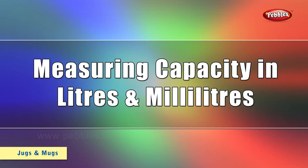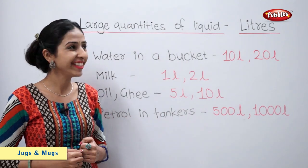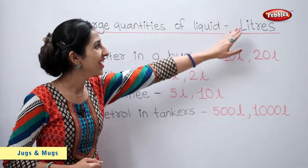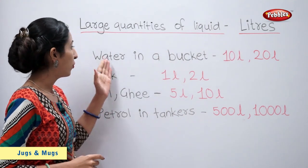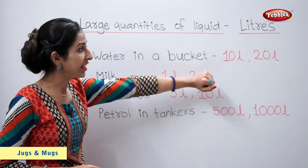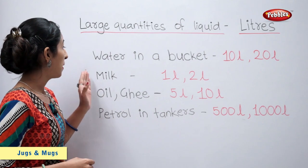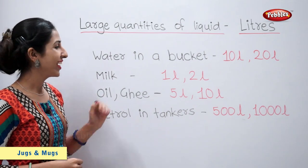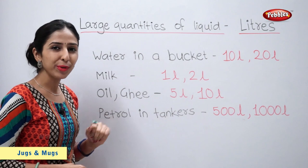Measuring capacity in litres and millilitres. Large quantities of liquid are measured in litres. For example, water in a bucket: 10 litres or 20 litres. Milk that we buy comes in 1 litre or 2 litre quantities.